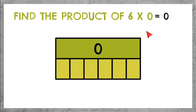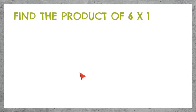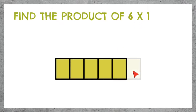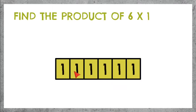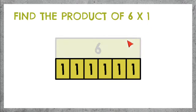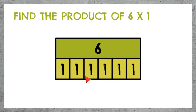Here we have 6 times 1. We need 6 parts with 1 inside of each part. If we count these up, we get 1, 2, 3, 4, 5, 6. So we know that 6 times 1 is 6. 6 parts with 1 inside makes 6.